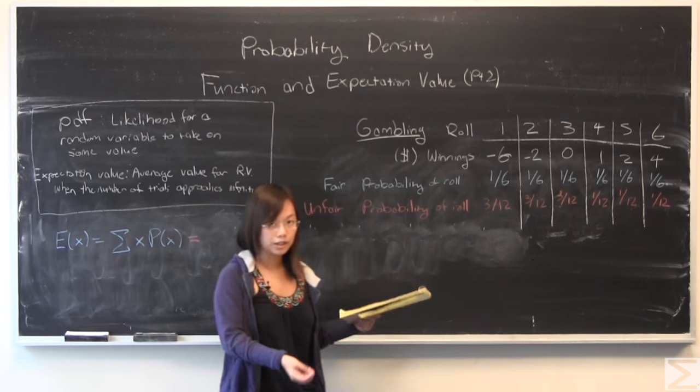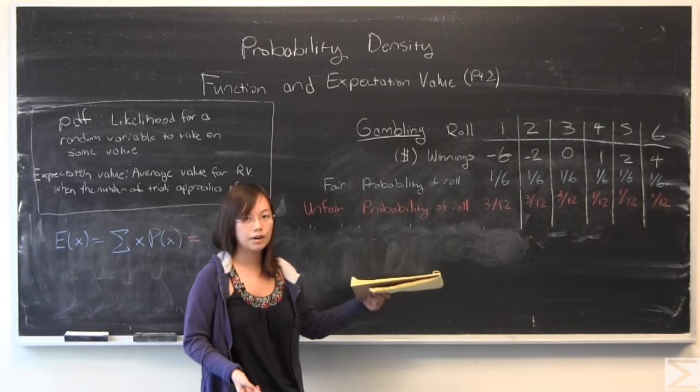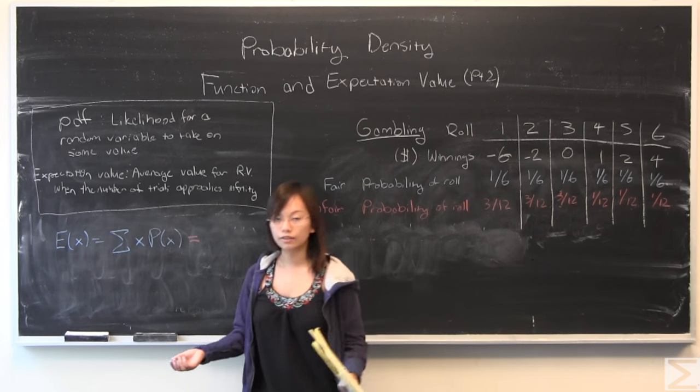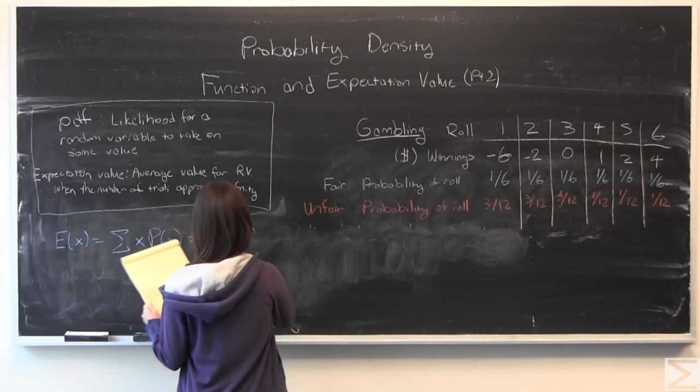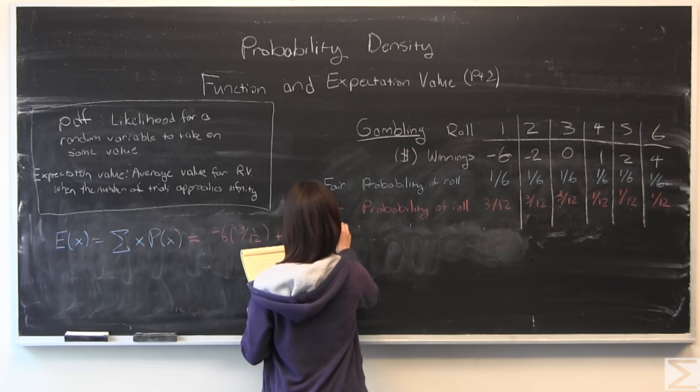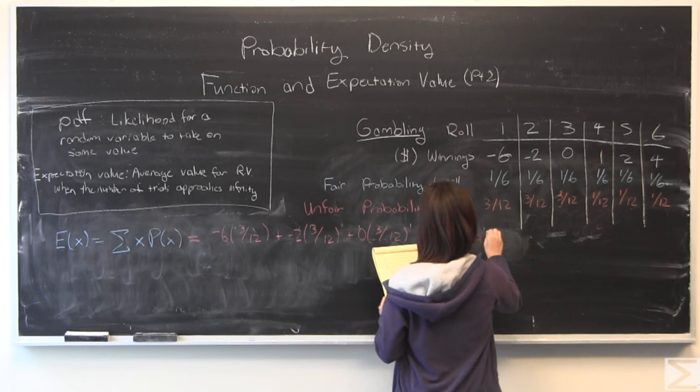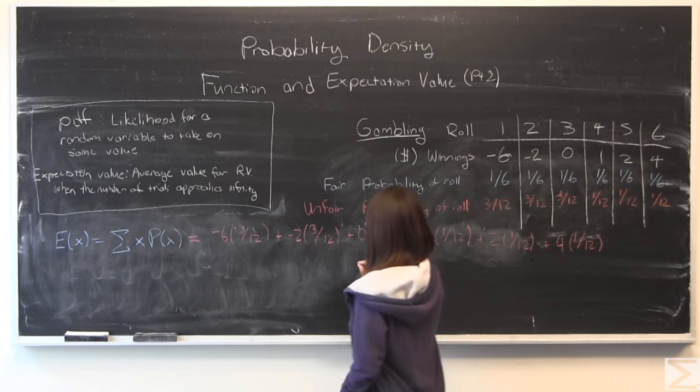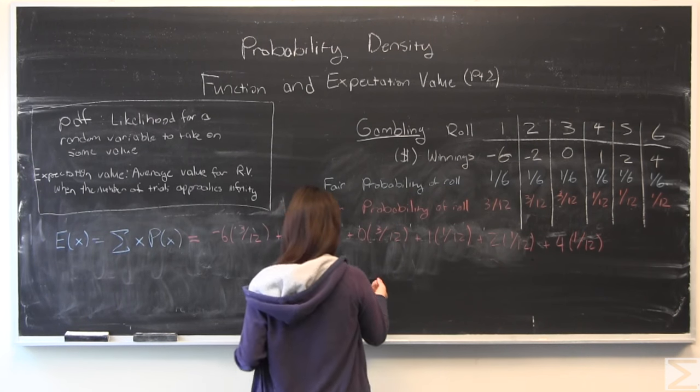Again, I have to take each probability, multiply it by the winnings, and if I sum that up, we can find out how much money we're expected to win or lose.